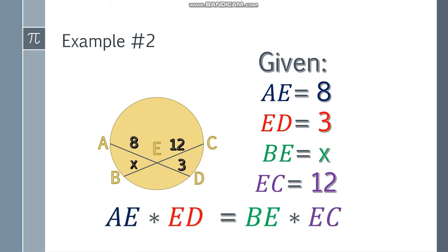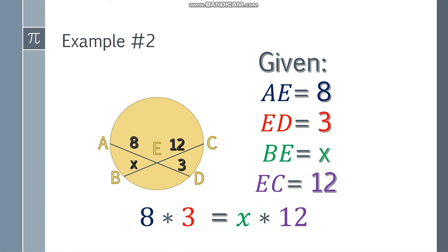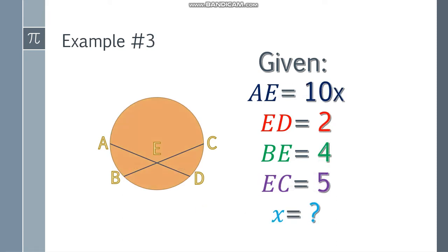Okay, place the formula and substitute the values. Simplify this one. 8 times 3 is 24, and X times 12, that will be 12X. Now divide both sides by 12, and you will get an answer of X is equal to 2. So this one is 2.